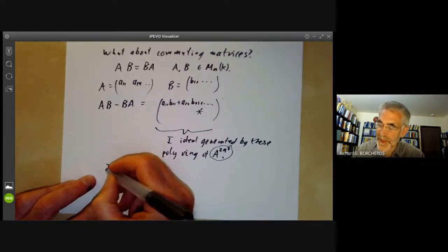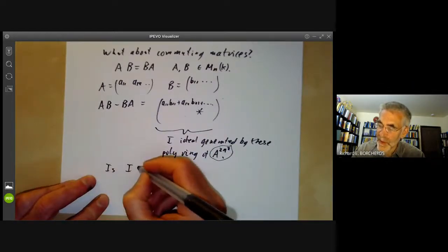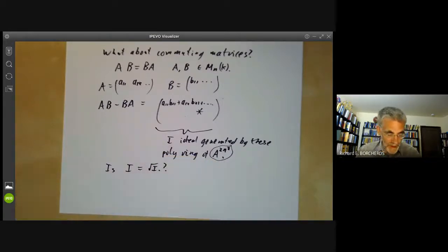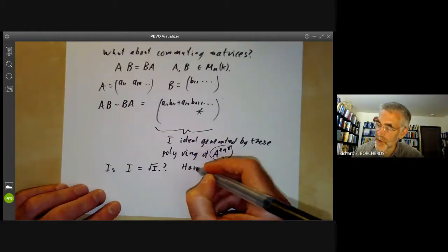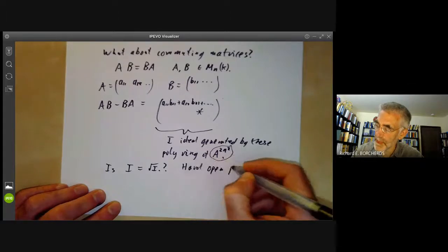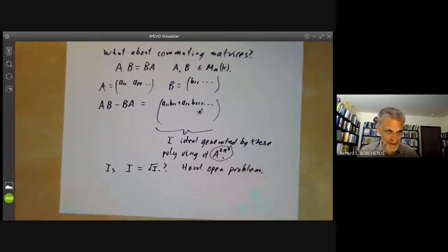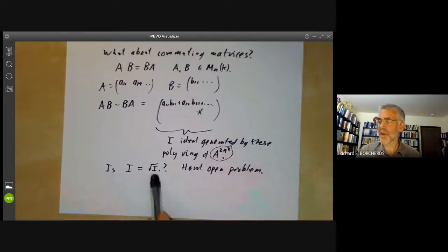And now we have the question, is i equal to the radical of i? And the answer is, well, I don't actually know what the answer is. This seems to be a very hard open problem. And the point of this is that it can be really difficult to find out what the radical of an ideal is. I find this a bit surprising. I mean,